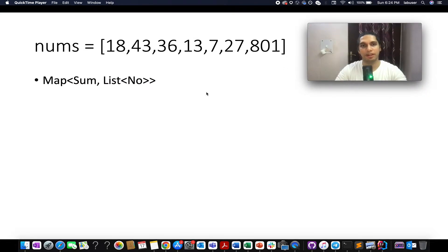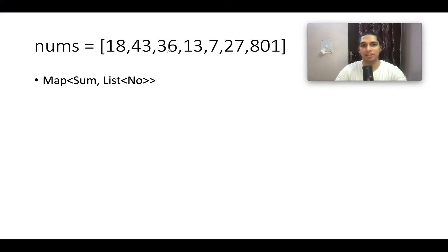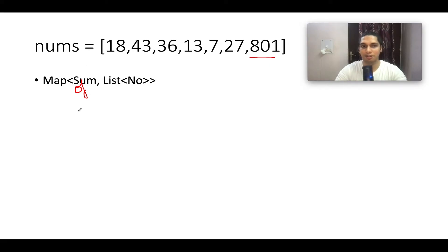I've taken a slightly different example to what was specified in the question so you get a good hold of the concept. We have the numbers 18, 43, 36, 13, 7, 27, 8, 0, 1. First, we need to identify numbers that have the same sum of digits. Let's understand the algorithm via the naive approach.